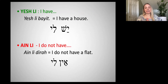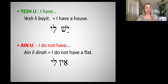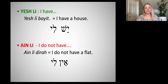It sounds clunky in English, but the Hebrew way to talk about possession is 'there is to me a house,' or 'there is to me a dog,' or 'there is to me a son.' Yesh li bait — there is to me a house. When we translate it into English, we say 'I have a house.' Yesh li banana — I have a banana. Yesh li ach — I have a brother.